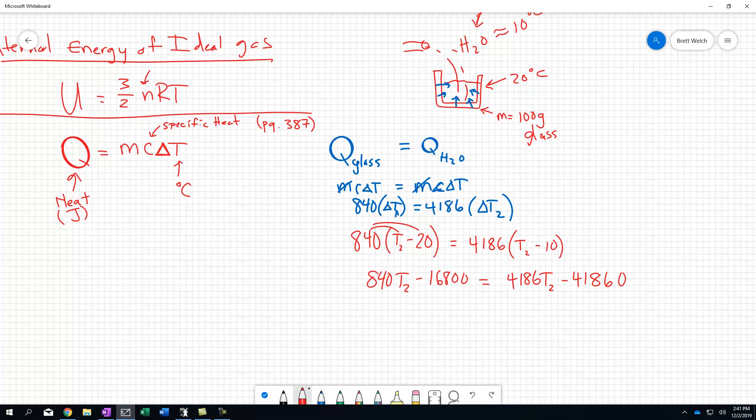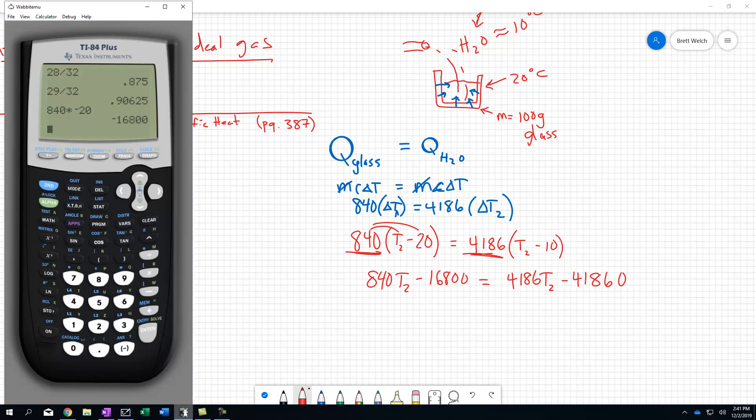To finish this problem off, we're just going to add our T2s to the same side and move that over. We're going to end up finding what's this temperature that both of them move to, and it should be somewhere between 10 and 20. Because the glass changes temperature at a lower requirement, it's going to drop temperature much faster than the water's going to raise temperature. You can finish this off, but I just hope that helps you set this idea of how do we solve these calorimetry problems. Good luck, and we'll see you then.